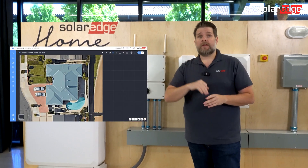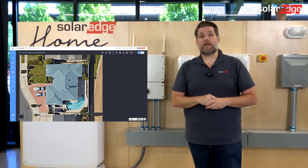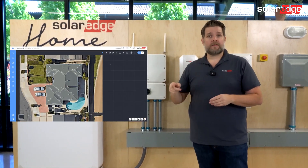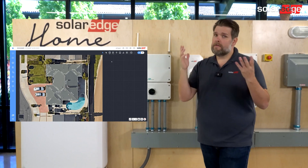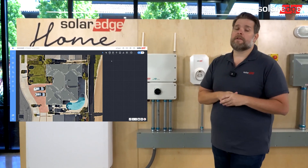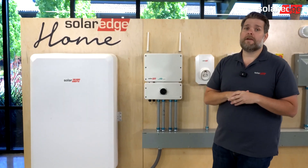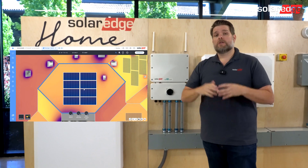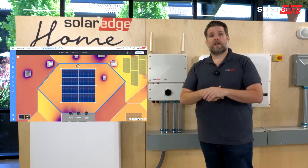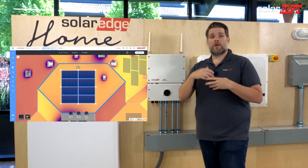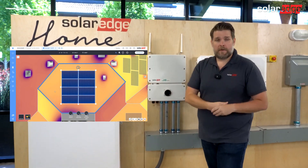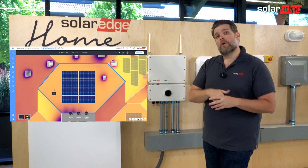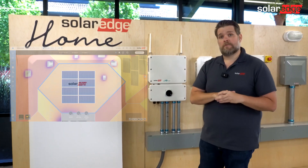Step three is site modeling. We're going to model the site by selecting the outside edges and modeling the roof lines as we see fit. Step four is adding PV modules. We're going to put PV modules on the roof so we know how much energy is being produced and try to target the 100% consumption offset.